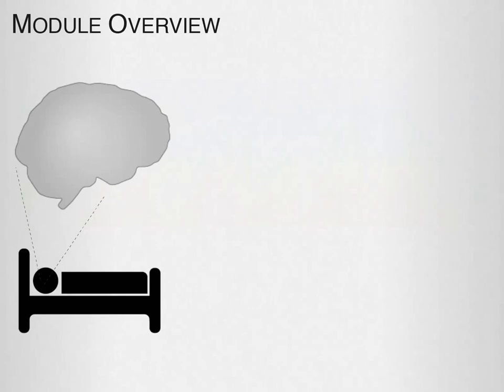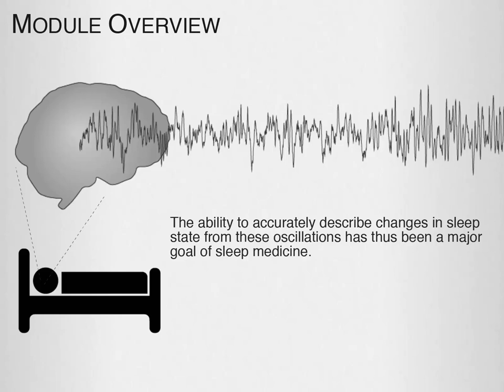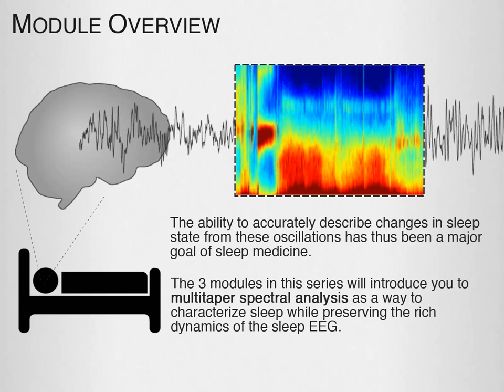During sleep, cortical and subcortical networks within the brain engage in highly structured oscillatory dynamics that can be observed in the electroencephalogram, or EEG. The ability to accurately describe changes in the sleep state from these oscillations has been a major goal of sleep medicine. The three modules in this series will introduce multi-taper spectral analysis as a way to characterize sleep while preserving the rich dynamics of the sleep EEG.